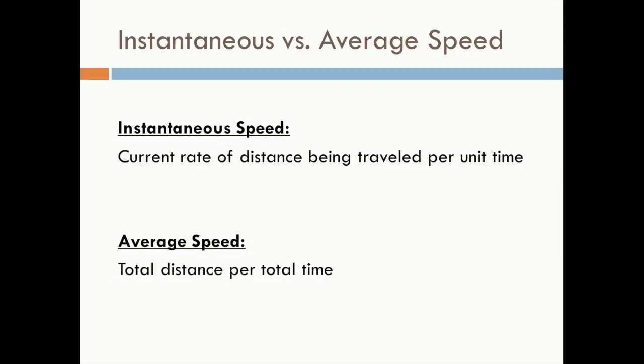Now let's talk about instantaneous versus average speed. Instantaneous speed is the current rate of distance being traveled per unit time, while the average speed is the total distance traveled per total time.